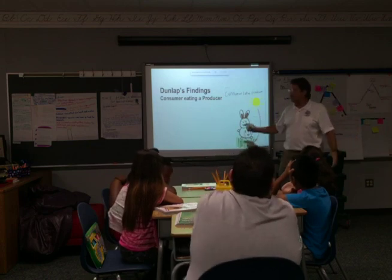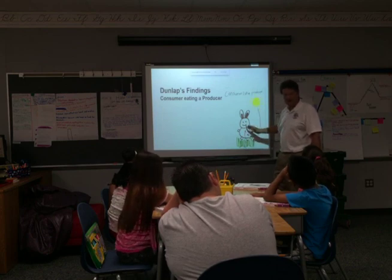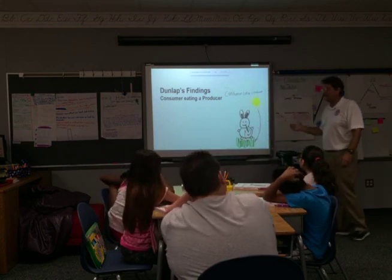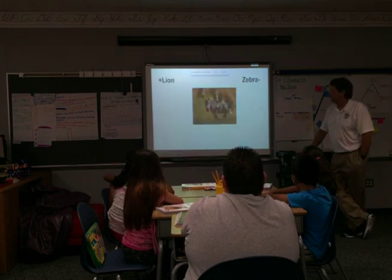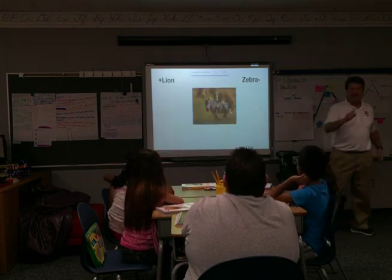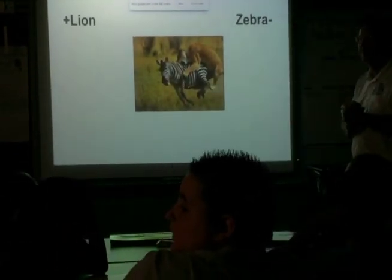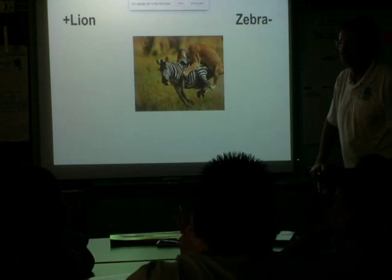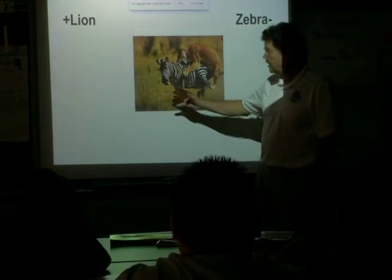I would add a hawk flying in: you'd have the sun, a producer, a consumer, and then if a hawk eats that rabbit it's a secondary consumer, or a tertiary consumer at the top. Another picture illustrates a plus/minus relationship — one organism benefits while the other is harmed.